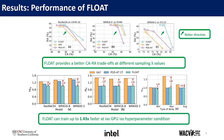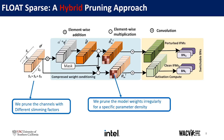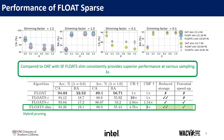To deploy FLOAT on resource-constrained edge devices, we present a hybrid pruning of FLOAT. In particular, this pruning does channel slimming globally while performing irregular parameter reduction of the channels that are present. As the results show, our hybrid pruning approach can yield speed-up while reducing parameters similarly to irregular pruning yet maintaining accuracy.